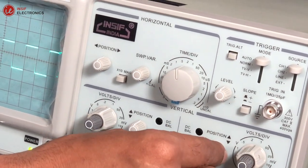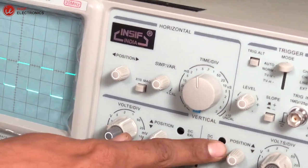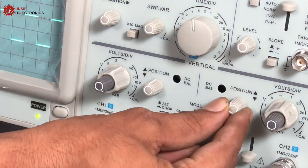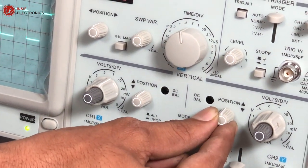Now, by rotating the position knob for channel 2, we can adjust the position of input signal in vertical direction, or Y direction.